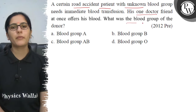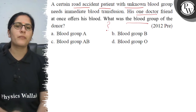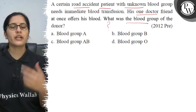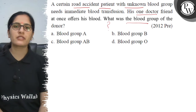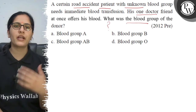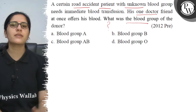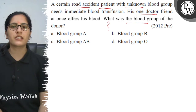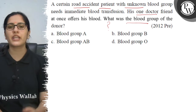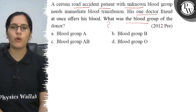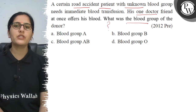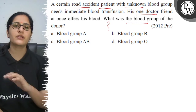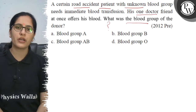So, let's figure out what blood group is going to be needed. If we don't know the person's blood group, which blood group can we give? The option is blood group O, because as we know, blood group O is the universal donor.